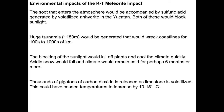Acidic snow would fall and climate would remain cold for six months or more — we don't know how long. Thousands of gigatons of CO2 would be released as limestone is volatilized, potentially causing temperatures to increase by 10 to 15 degrees centigrade. So we've punched the Earth, filled the atmosphere with dust and acid, shutting off sunlight leading to a cold period. When that material is removed from the atmosphere, it clears up — now full of CO2 — and temperature grows way up.